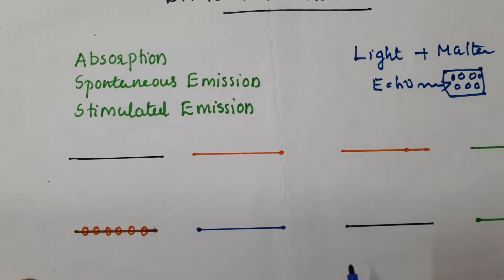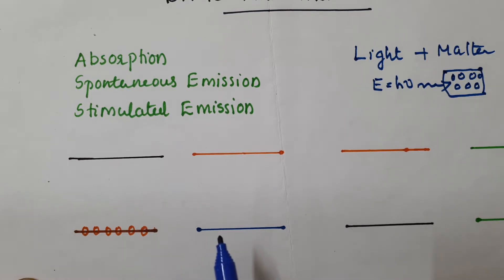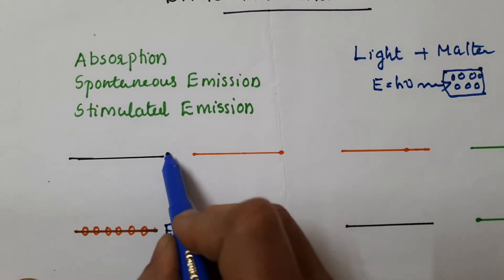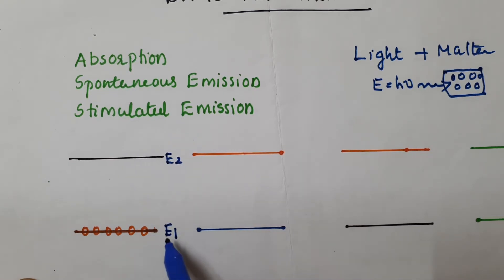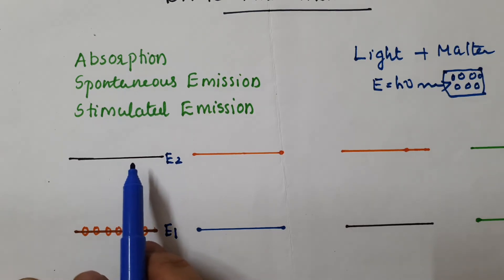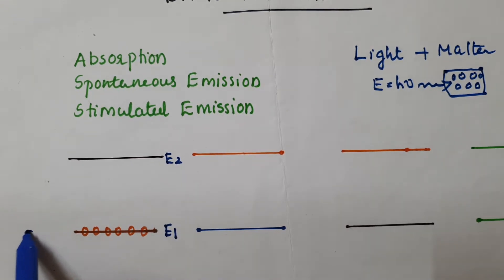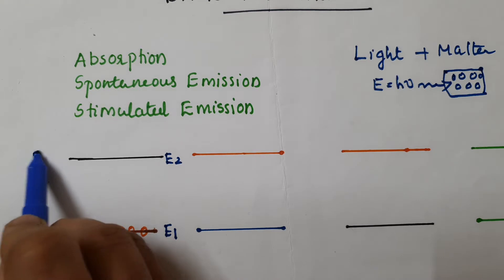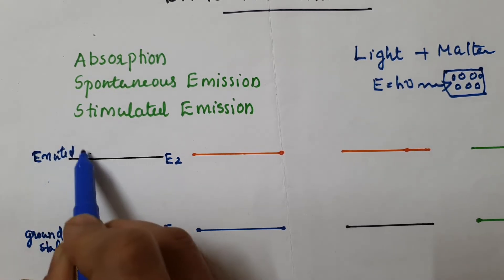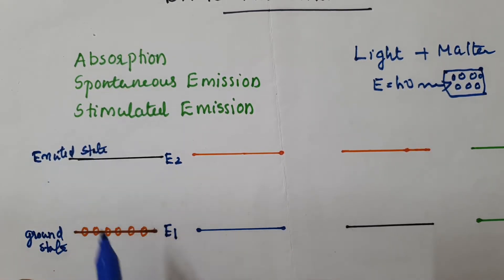We consider the energy levels of an atom. Every physical system has energy levels. We consider two different energy states of an atom: E1, the lowest state, and E2, the higher state. E1 is called the ground state and E2 is called the excited state.